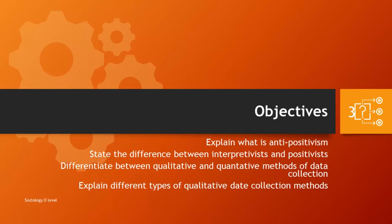In this lesson we will explain what is anti-positivism. We look at the difference between the interpretivist and the positivist. At the same time we look at the difference between the quantitative and qualitative methods of data collection, and explain the different types of qualitative data collection methods which are used by the interpretivists.